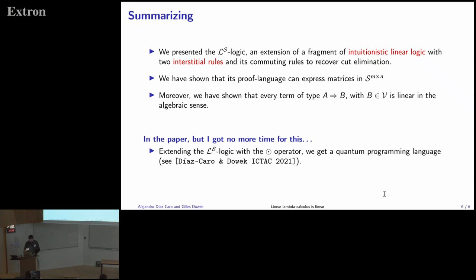So summarizing, we presented this LS logic as an extension of a fragment of intuitionistic linear logic because we don't have all the connectives. And extension because we added these two intuitionistic rules and the commuting rules to recover cut elimination. We show that the proof language can express matrices. Moreover, we have shown that every term of this type is linear in the algebraic sense. And also in the paper, but I don't have time for it, we use this for quantum computing. In quantum computing, all the operators are matrices. And then with this we can encode quantum computing. And we have another connective that we presented already in another paper in ICTAC last year where you can encode measurements in quantum computing. But that is just to send you to read the paper because I don't have time for that. Thank you.